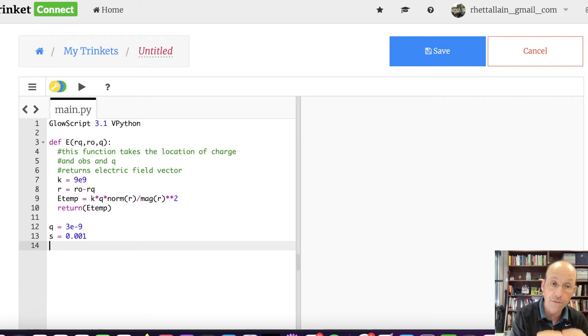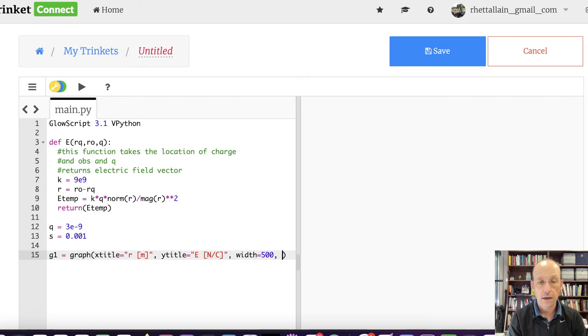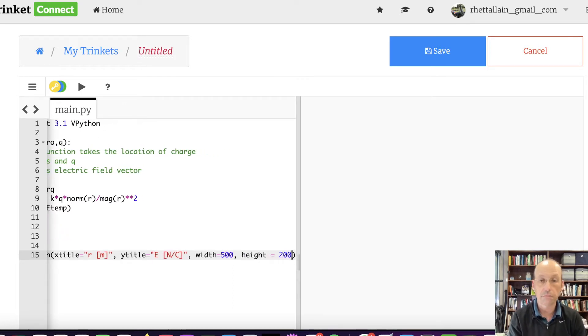Now I want to make another function that calculates the magnitude of the electric field. I'm trying to think if I should make that as another function or just do it straight out. Let's just do it, let's not worry about that. So let's make a graph. Graph G1 equals graph, X title equals R in meters, and then Y title is going to be equal to E the total electric field in newtons per coulomb. Just so you know, I always do square brackets for my units. You can do whatever you want, it's just a text field. I also am going to put width equals 500, height equals 200.